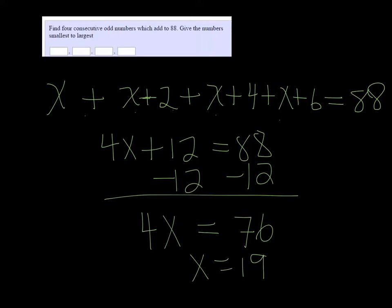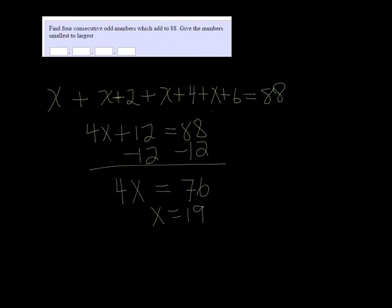So the first odd number is 19. The next one is 21. Let me write this down. So 19, 21, 23, and 25.